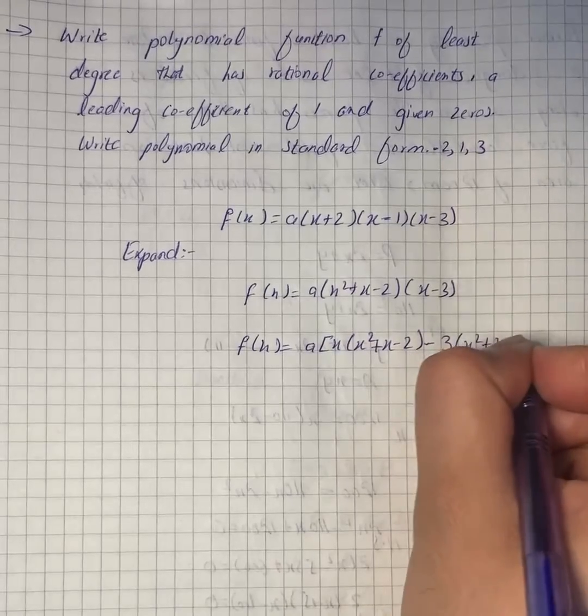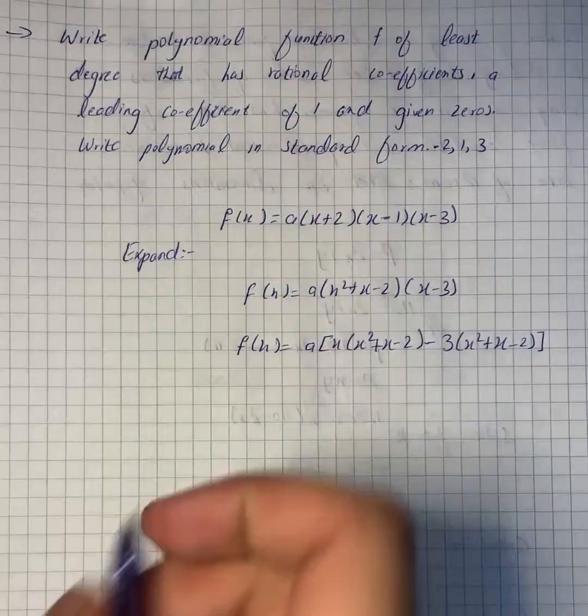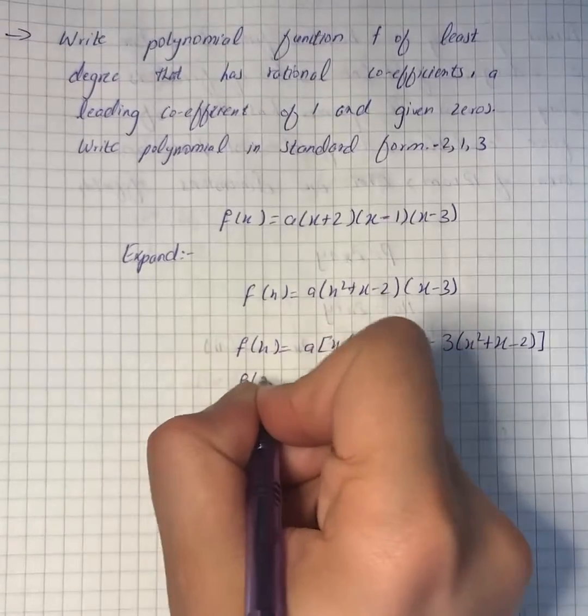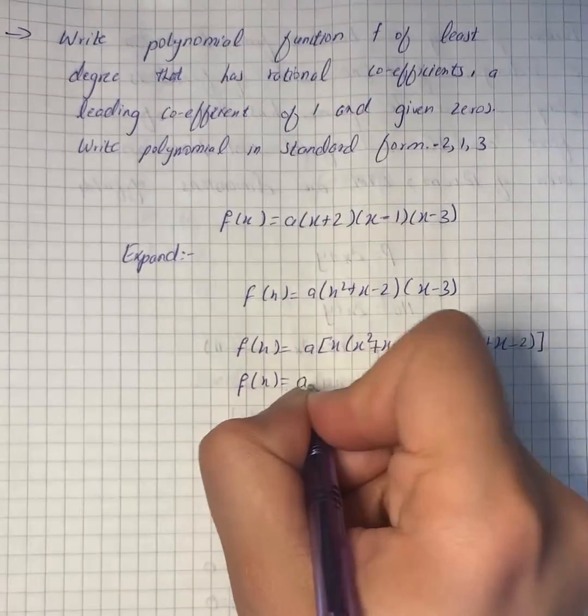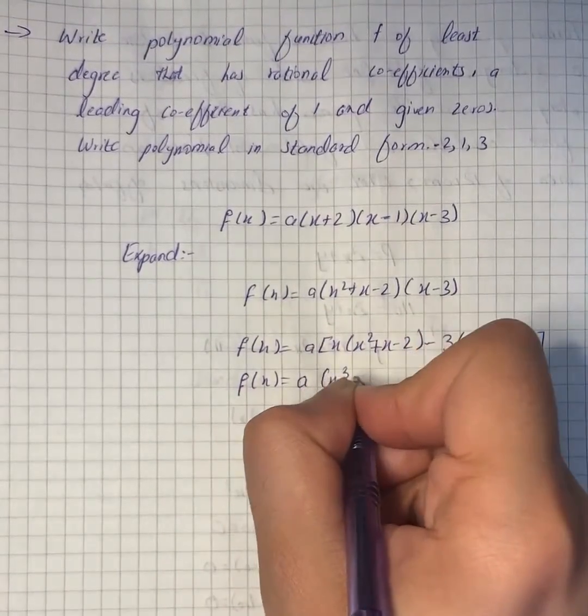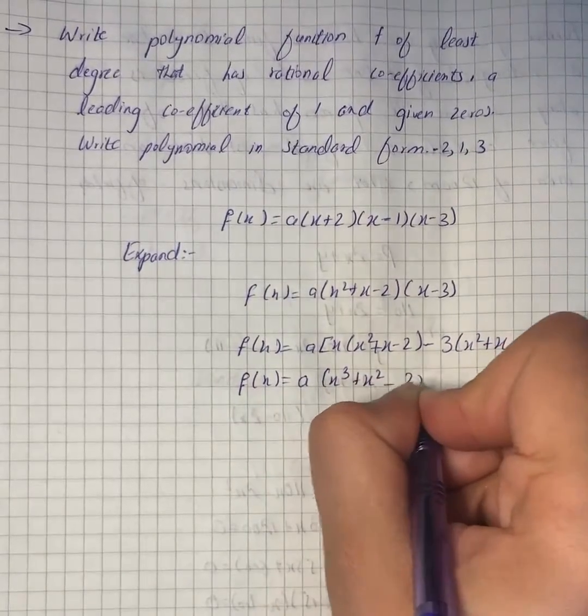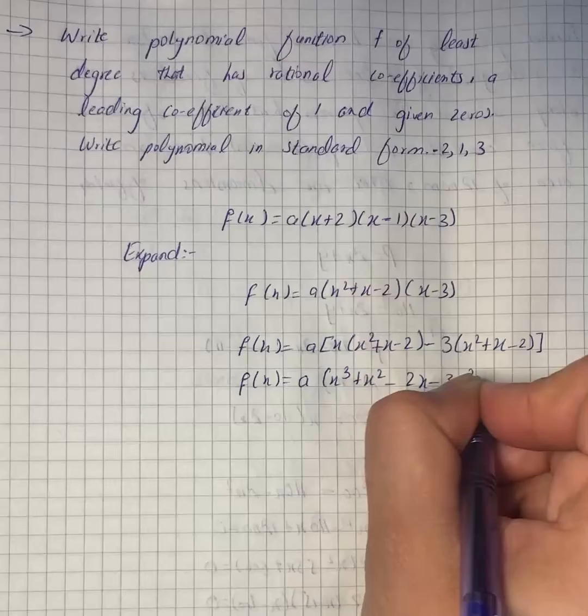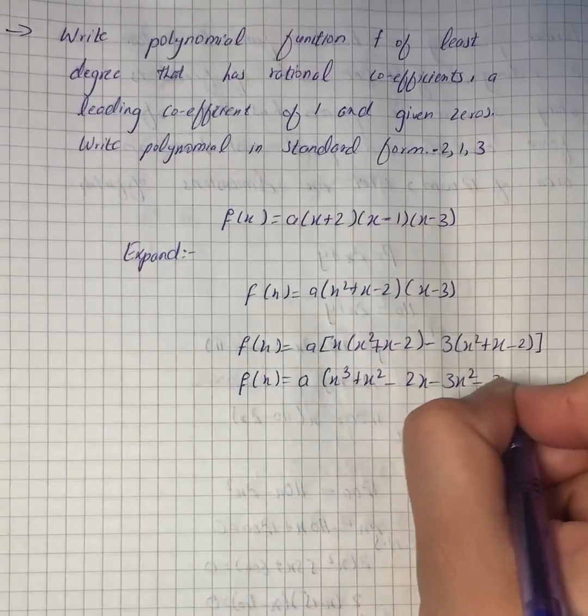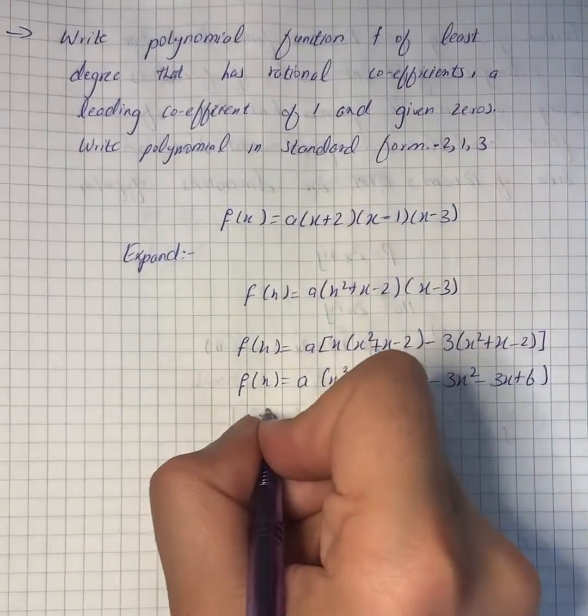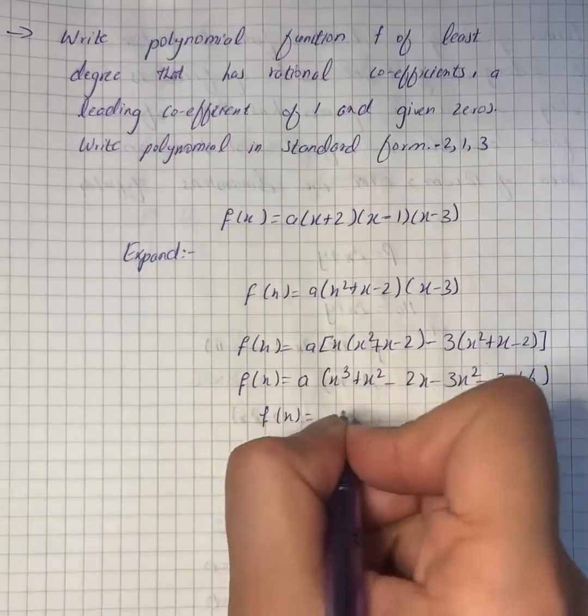Next we have f(x) equals a into x raised to power 3 plus x square minus 2x minus 3x square minus 3x plus 6. So f(x) is equal to a into x cube minus 2x square minus 5x plus 6.